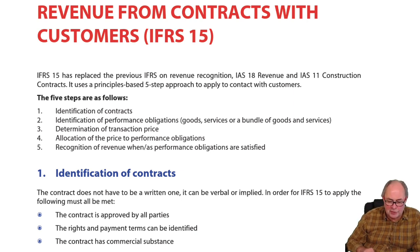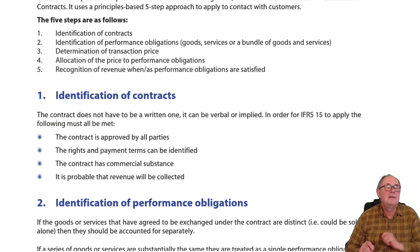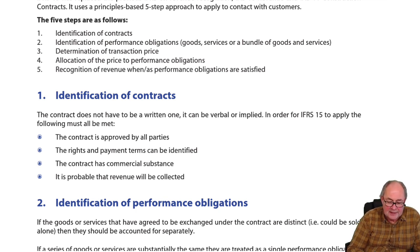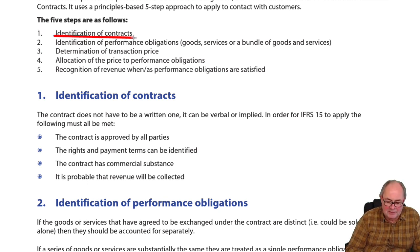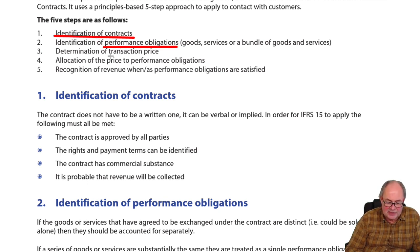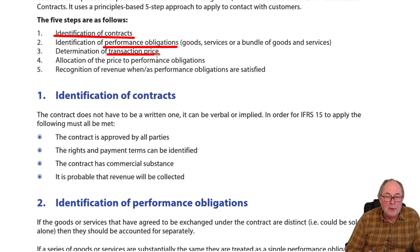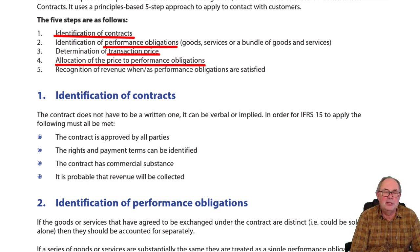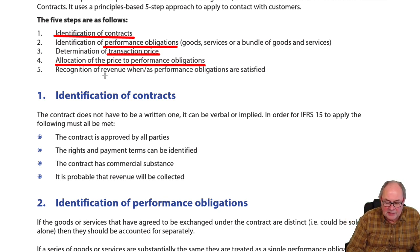IFRS 15 introduced a five-stage model for revenue recognition, which you will have met when you studied financial reporting. Step one: determine whether there is a contract. Step two: decide what the obligations are under that contract. Step three: understand what the price is. Step four: allocate the price to the obligations. And finally, as those obligations are satisfied, book the revenue.